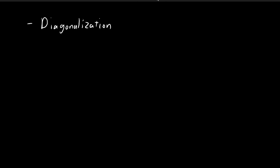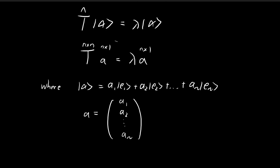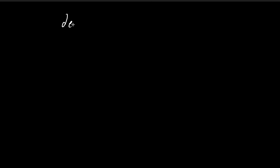In this video we're going to introduce the process of diagonalization. Recall that in the last video we introduced the concept of eigenvalues and eigenvectors, and we found that we can express this using matrix form, and then we found that we can solve this equation in order to find the eigenvalues.